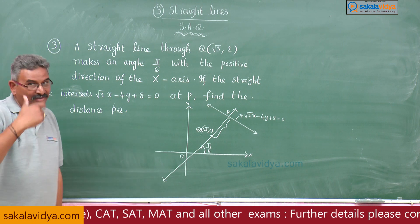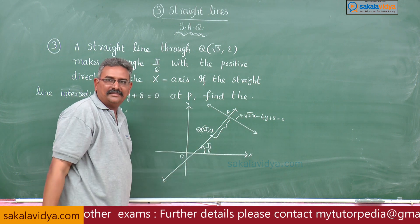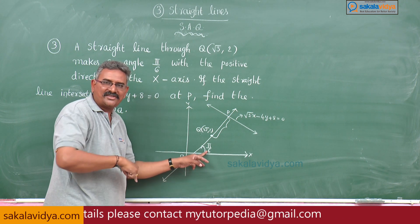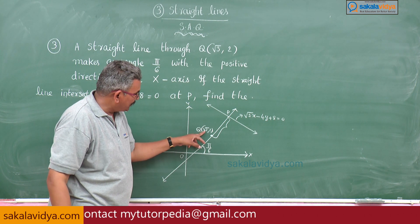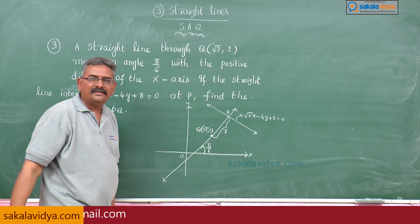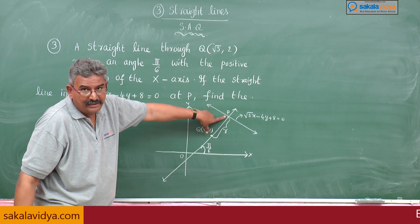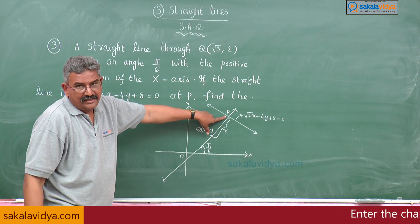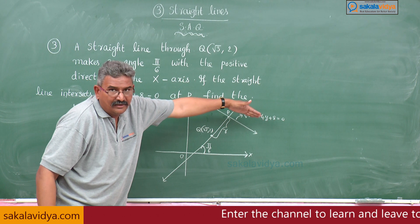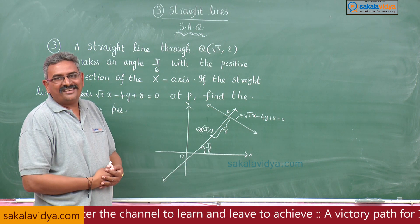So this distance we have to find out. Let us think how to solve this problem. I hope you might have got an idea. The point P on this line we can find out. Making θ = π/6 with the positive x-axis direction, and the point (x₁, y₁) is (√3, 2). The distance PQ we do not know — say r.